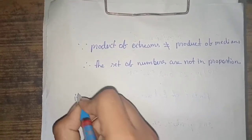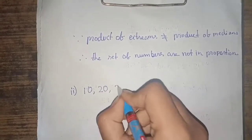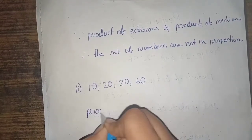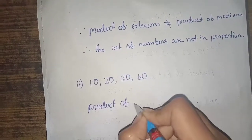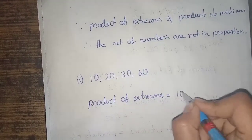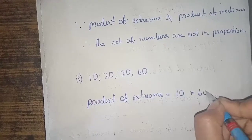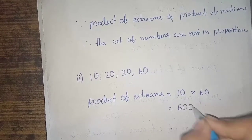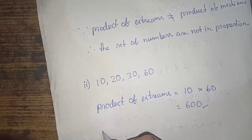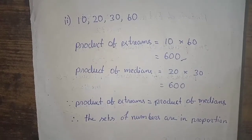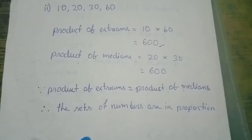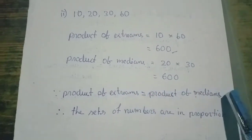The second set of numbers is 10, 20, 30, and 60. Product of extremes is 10 and 60, multiply to get 600. Product of medians is 20 and 30, also 600. Since product of extremes is equal to product of medians, therefore the set of numbers are in proportion.